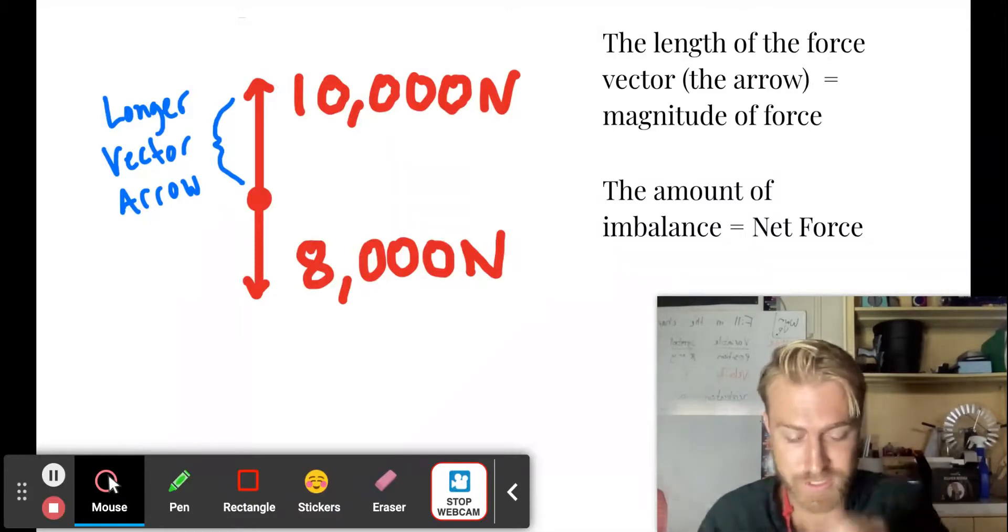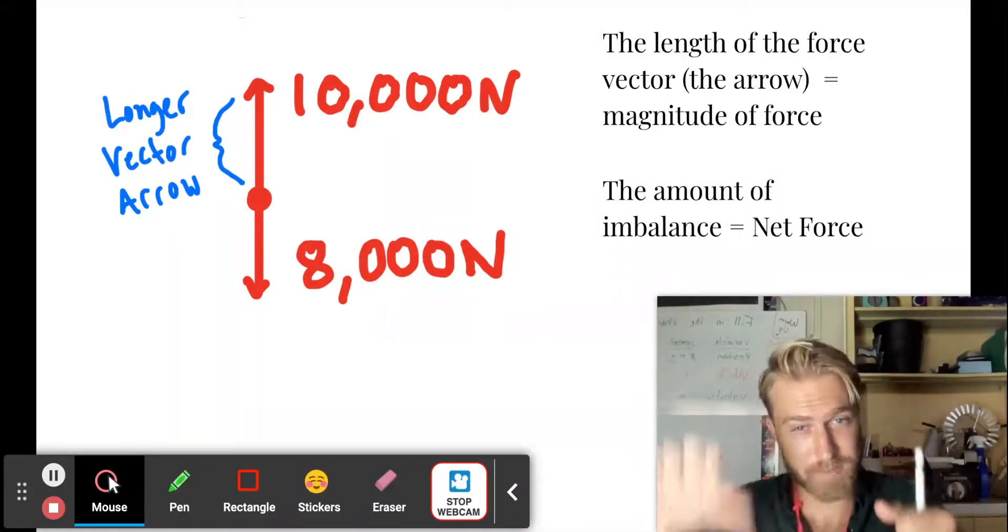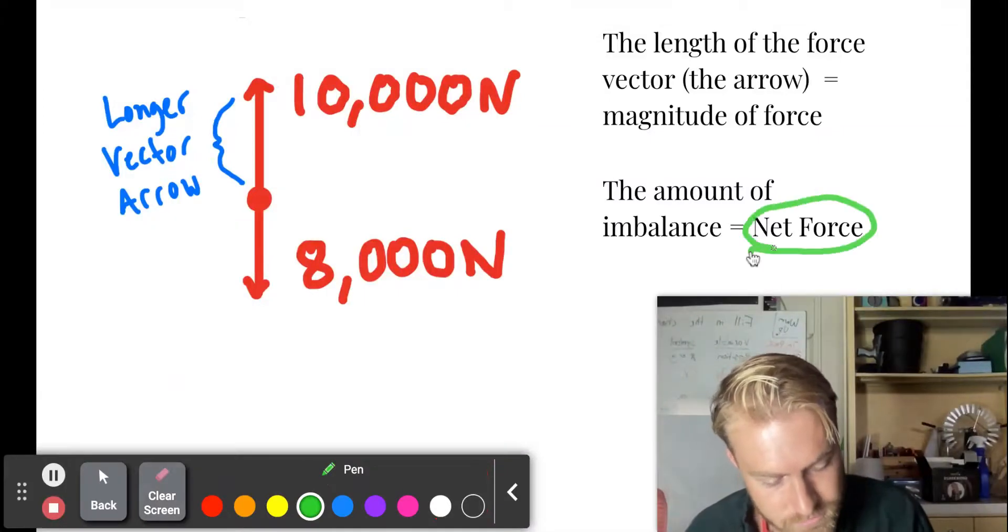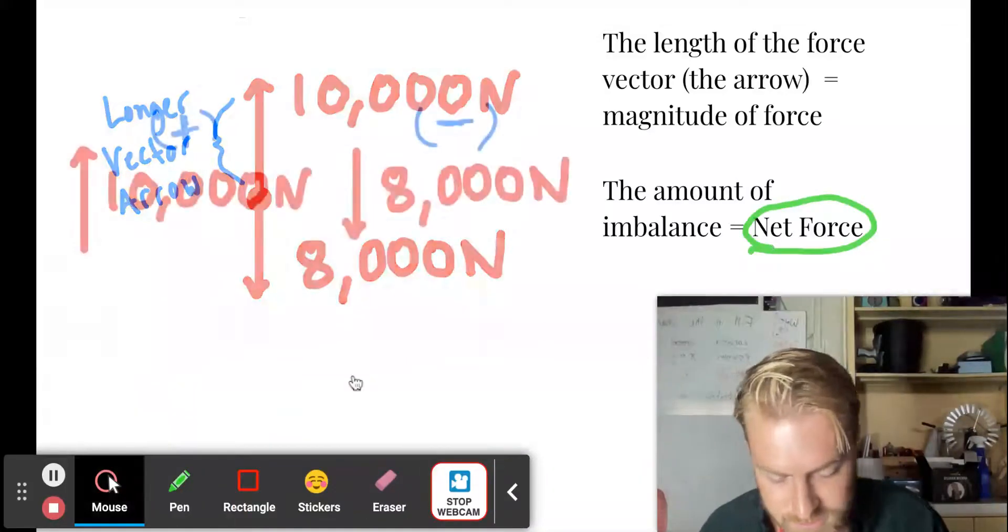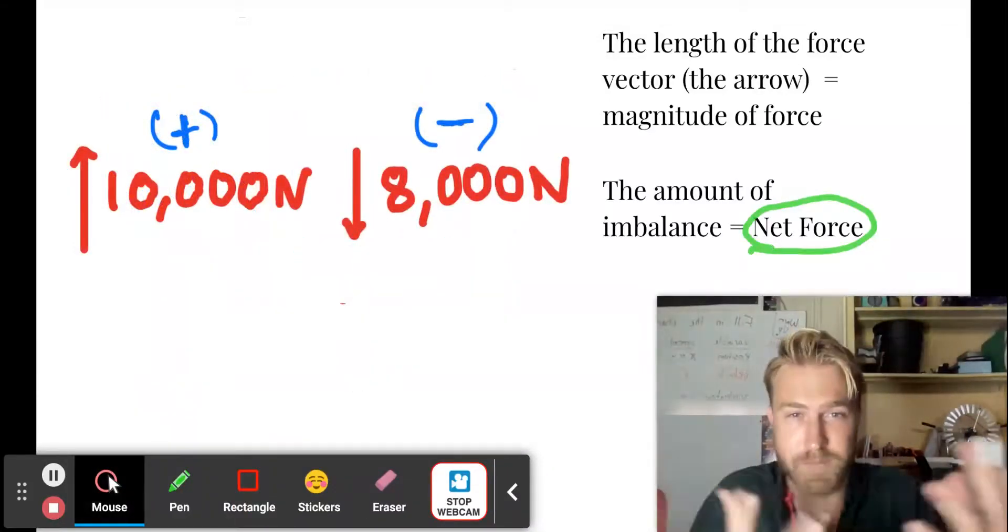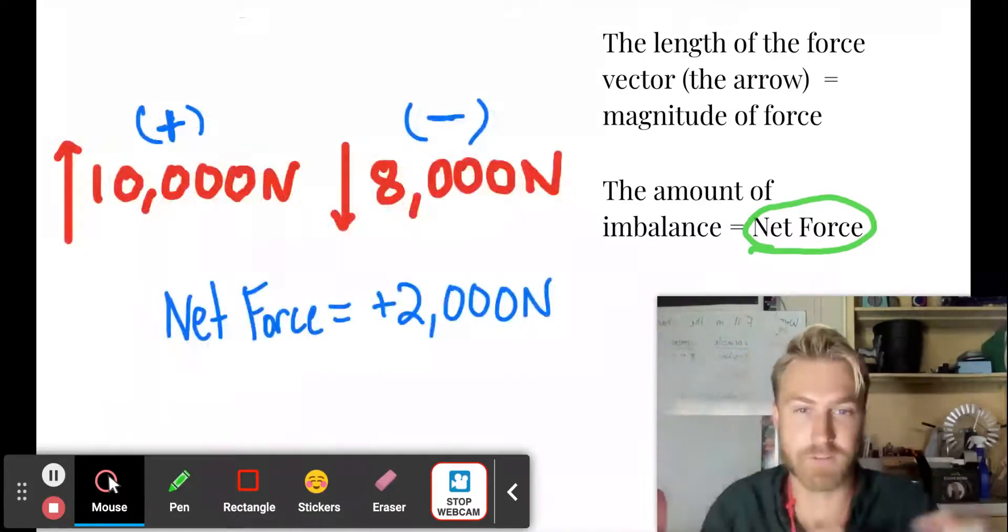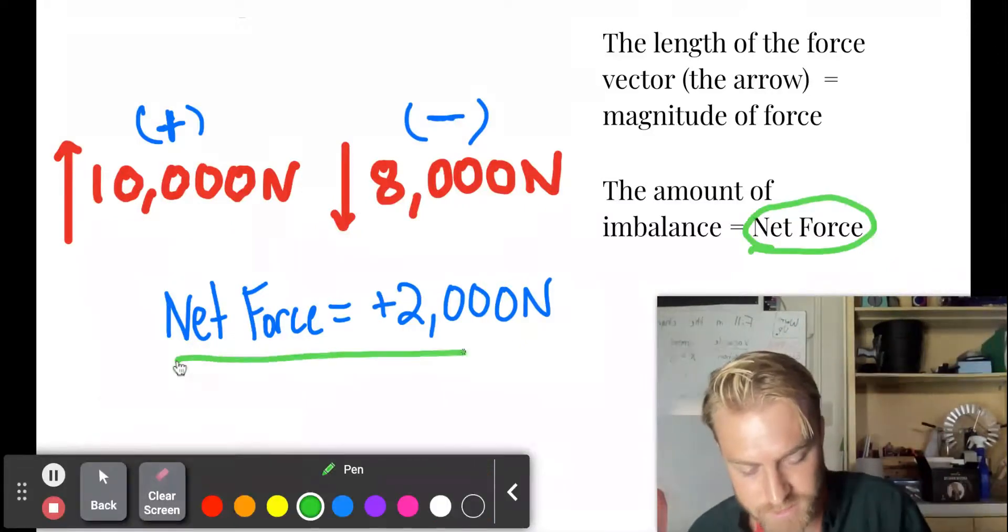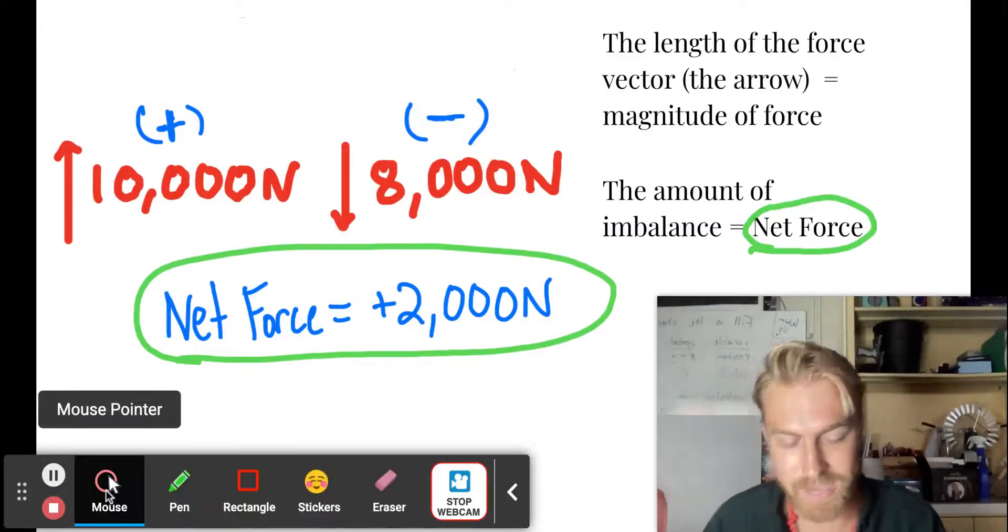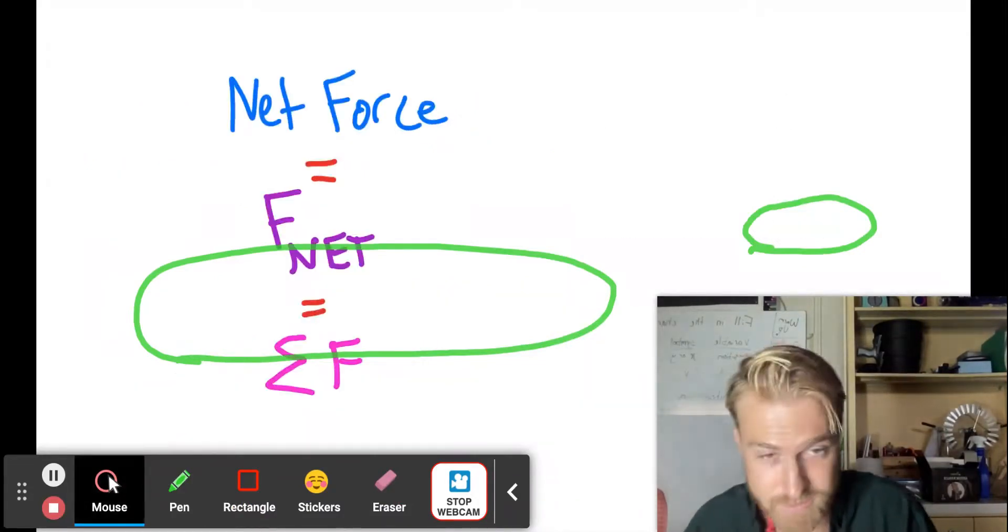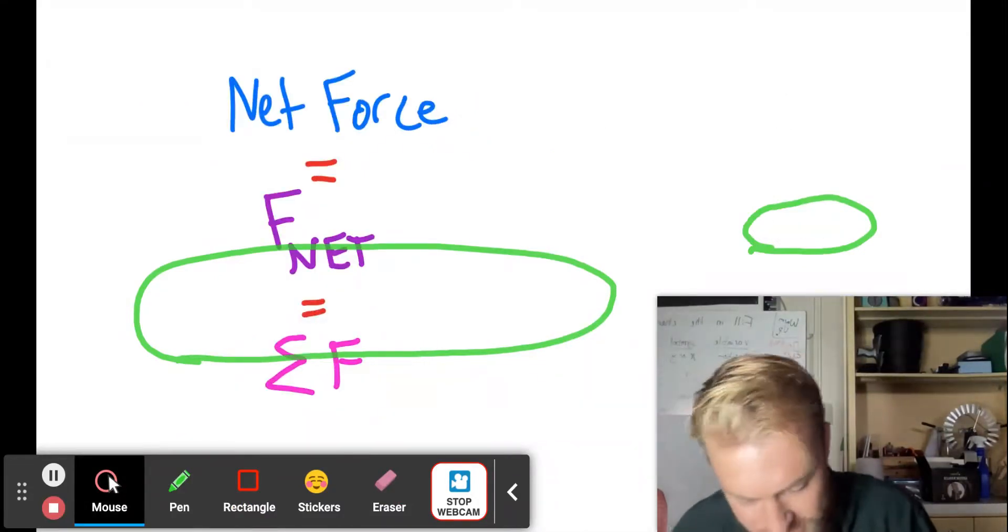And if there's an imbalance, which you can see there's an imbalance, 10,000 up, 8,000 down, we call that the net force. We call that the net force. Net just means sum. So you sum, you make a little addition, 10,000 up, 8,000 down, you're left over with 2,000 up. So that's our net force. And so we can pretty simply calculate that net force just like that. It's the amount of imbalance. And that'll tell us that something's going to accelerate.